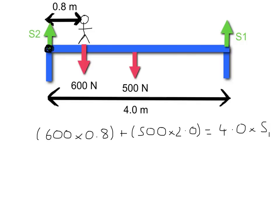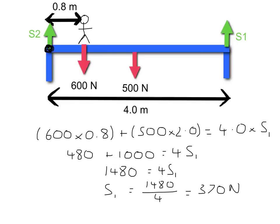OK. So, 600 times 0.8 is 480. So, it'll be 480 plus 500 times 2, which is 1000. And that's going to be equal to 4 lots of S1. So, 1480 is equal to 4 lots of S1. That makes S1 equal to 1480 divided by 4, which is 370 newtons.